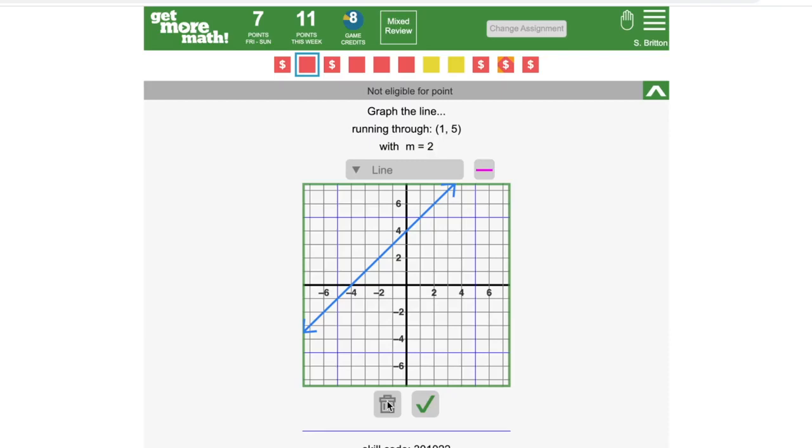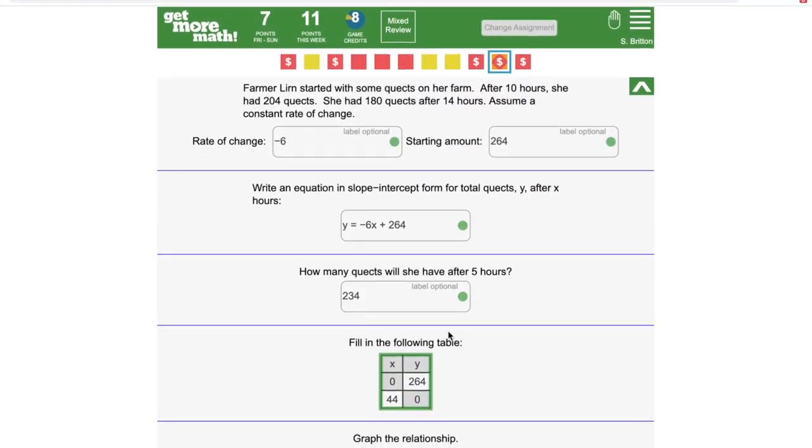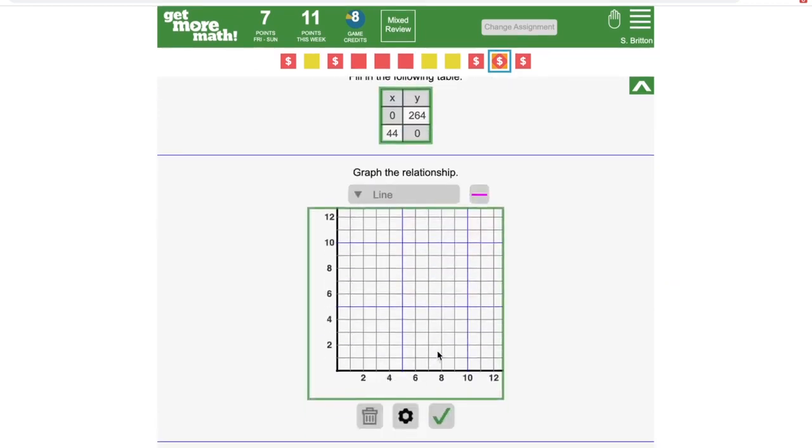Instead, I have to use the trash can below the graph to delete everything. So here we have a word problem, and there's a few things that we need to know how to do in order to graph it successfully.